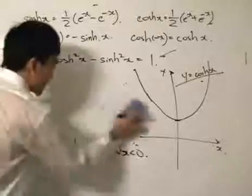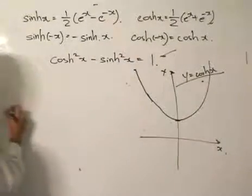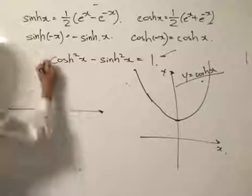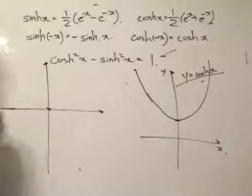So finally, illustrating the graph, the sinh x graph. So passes through origin, right? And that's the only point where it passes through the origin.